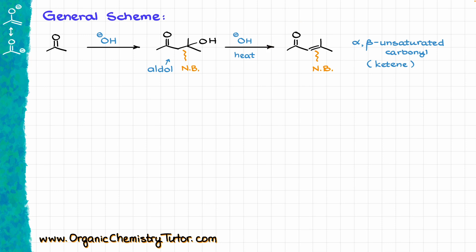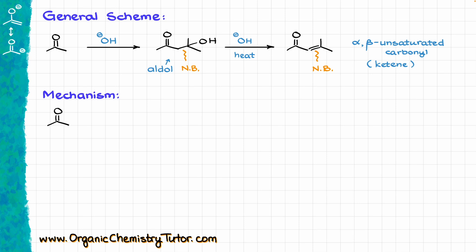The difference, however, is that instead of acidic conditions, we are working in basic conditions, which means that our mechanism is going to be different as well. We are going to start by taking our starting material — acetone in this case — and reacting it with the base. Typically, we are going to see this reaction done in sodium or potassium hydroxide. The first step is going to be a proton transfer, where our base deprotonates the alpha position of our carbonyl, making the corresponding enolate species, which is going to be our nucleophile.